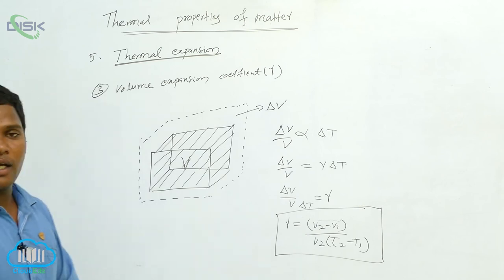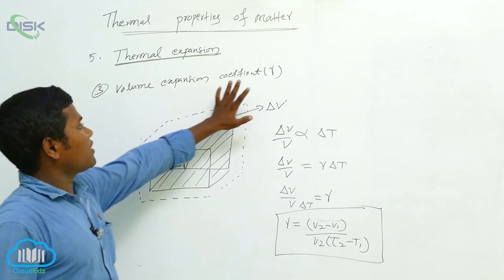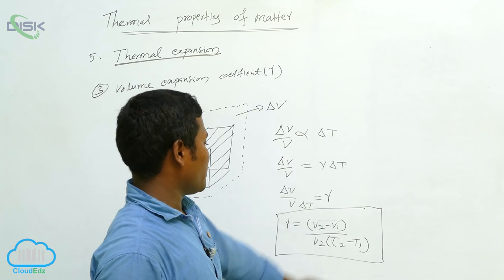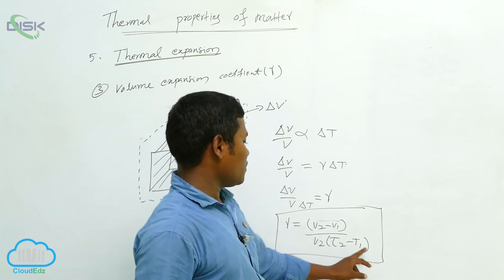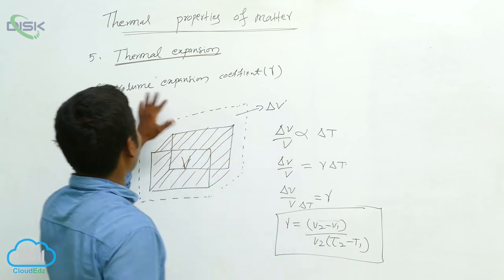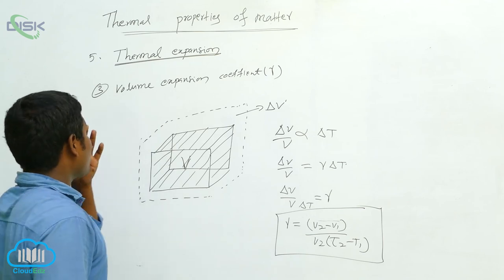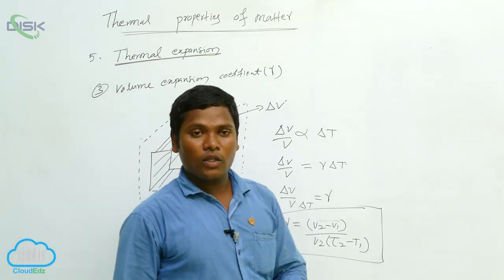Okay, this we are calling the volume expansion coefficient. So what is that formula? V2 minus V1 by V2 into T2 minus T1. Like that, we can say these are the thermal expansion coefficients.